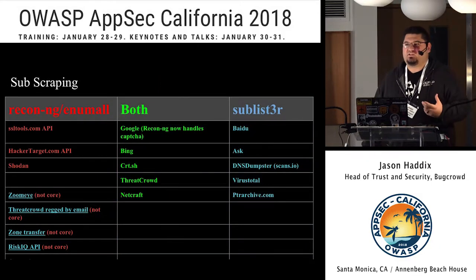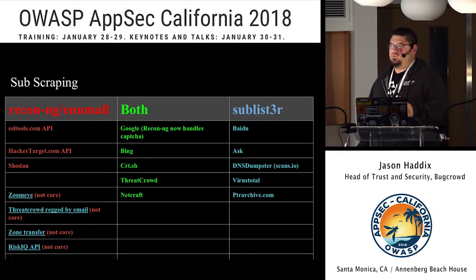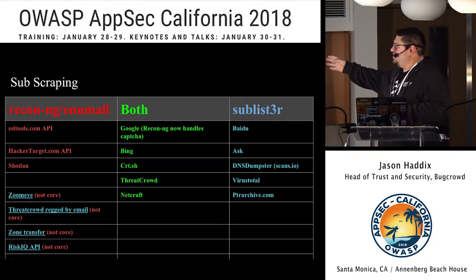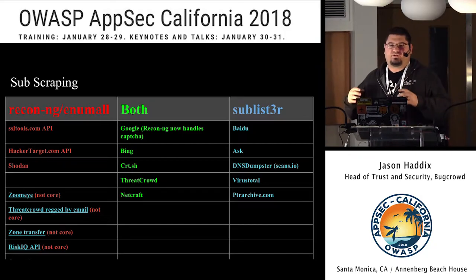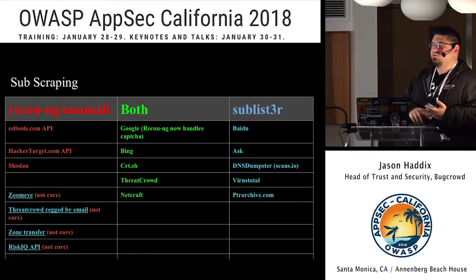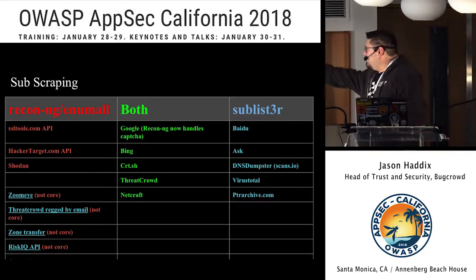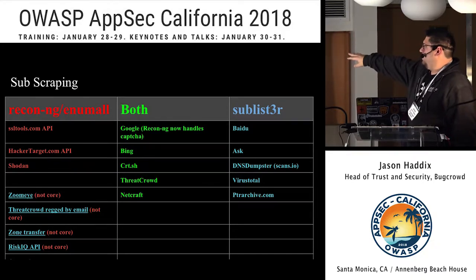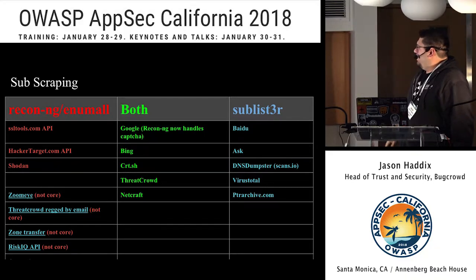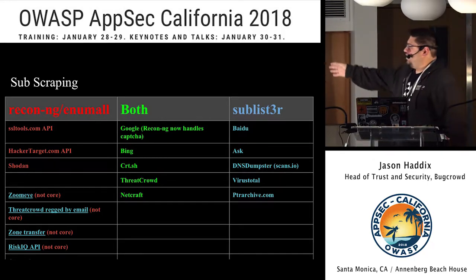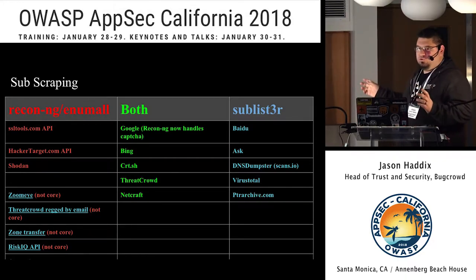In subdomain scraping you have two or three tools that are really pertinent. You have Sublist3r on one side, and then you have another toolset called Recon-ng made by Tim Tomes. Recon-ng is a whole OSINT framework to do discovery on people, places, and domains. I also wrote a tool that wraps around Recon-ng called Enamel. It does SSLtools.com, Hackertarget.com, and Shodan via their APIs. There are some optional modules: ZoomEye, ThreatCrowd, generic zone transfer, the RiskIQ API, and census.io. A lot of people end up using both Sublist3r and Recon-ng.